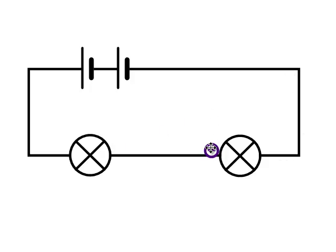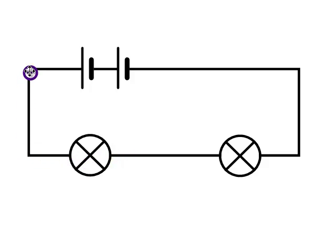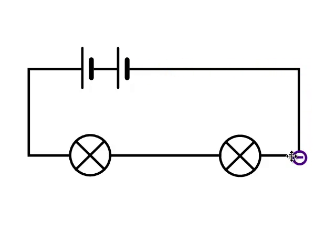The current that's flowing in this series circuit consists of electrons — lots and lots of negatively charged electrons flowing around the circuit. Now we're going to have a look at the current that you would measure in this series circuit.